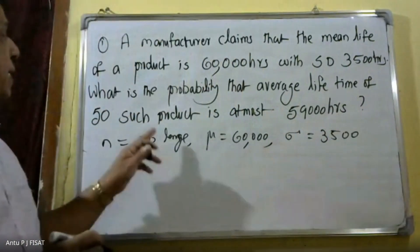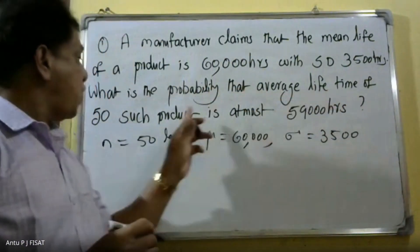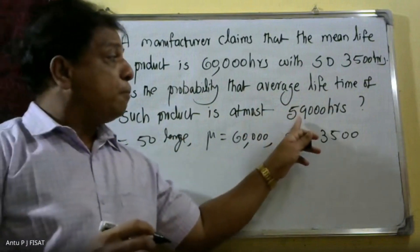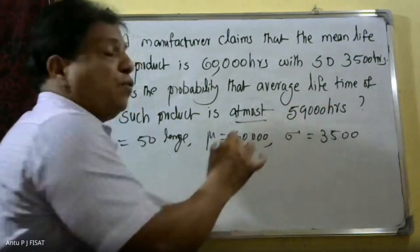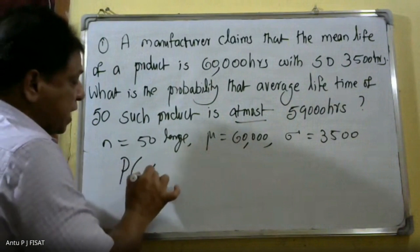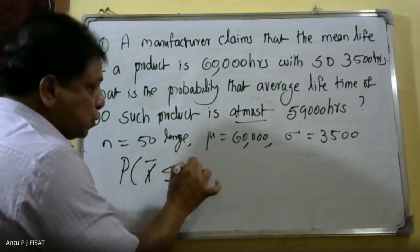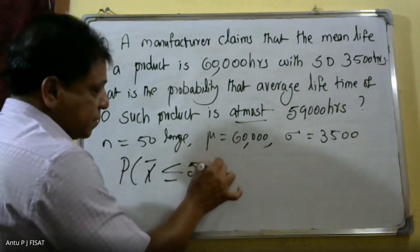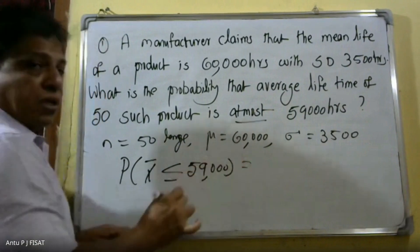We need to find the probability that the average lifetime of 50 such products is at most 59,000 hours — that is, the probability of X-bar less than or equal to 59,000.